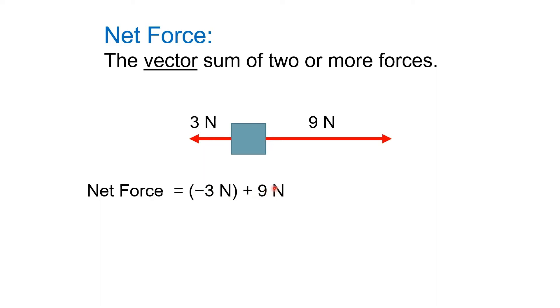Over here, the nine newtons would be what we call the magnitude. And then the direction would be the positive or lack of negative implies a positive. So we're adding the two vectors together and including direction in our addition. So this is an example of one-dimensional vector addition.